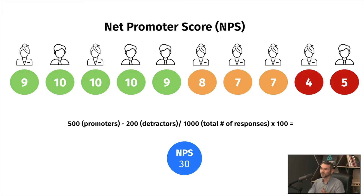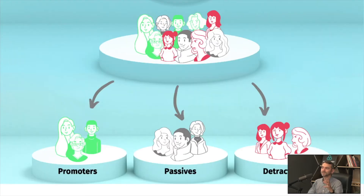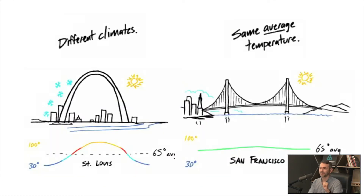In this case, we have 1,000 responses and we have 500 promoters and we have 200 detractors. That means the NPS is going to be 30. All of those customers will fall into this type of buckets: promoters, passives, and detractors.